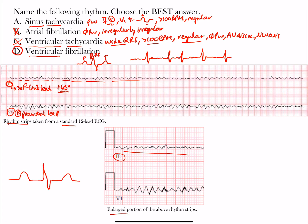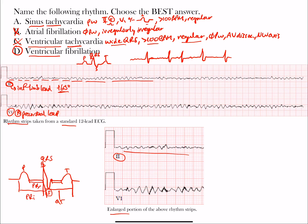Let's quickly run through the normal ECG complex. This is the P wave. This is our QRS complex — called an RS complex here because there's an R wave and S wave. The R wave is the first positive deflection of the QRS complex. The S wave is the first negative deflection below baseline after the R wave. This is the T wave. Here is the ST segment and J point. This is the QT interval, the PR segment, and the PR interval.